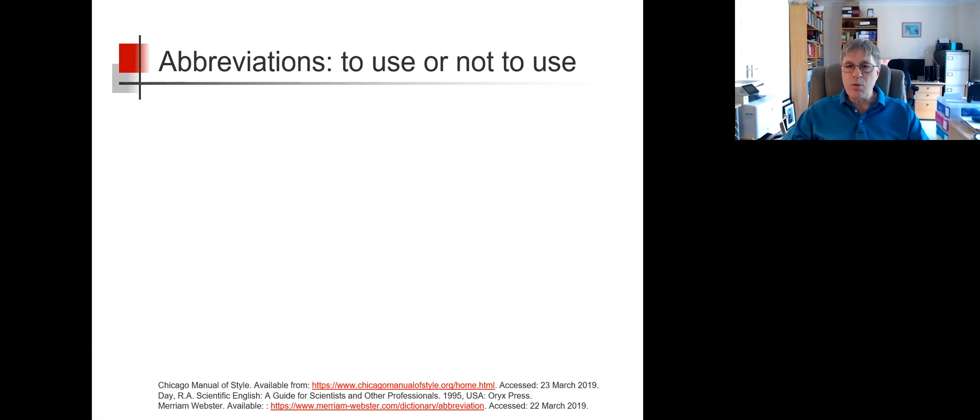Here are some tips about when to abbreviate and when not to abbreviate. The Chicago Manual of Style suggests using abbreviations if they're to be used around five or more times in an article.